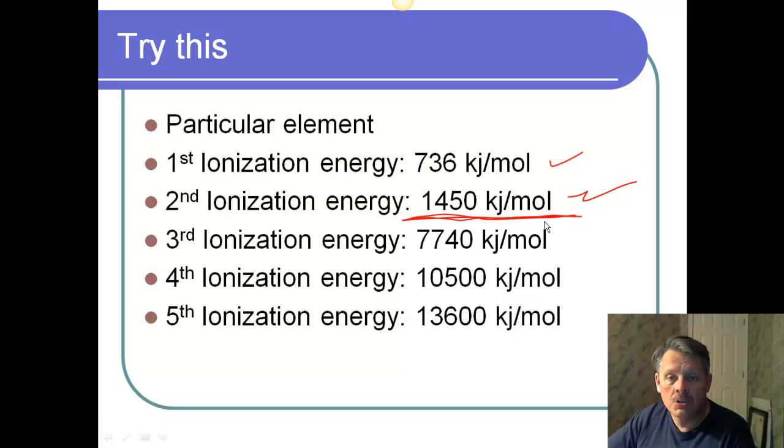All right, so here's your break. So, if you were just looking at this, you should be able to say, well, I think this thing belongs in column two because it probably loses two electrons. Hence, it probably takes on a 2+ charge. And I will tell you that this particular element happens to be magnesium. So, it does exist in column two.